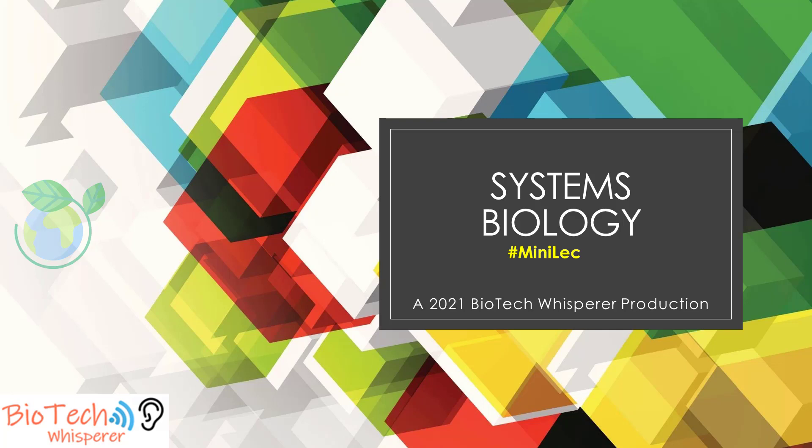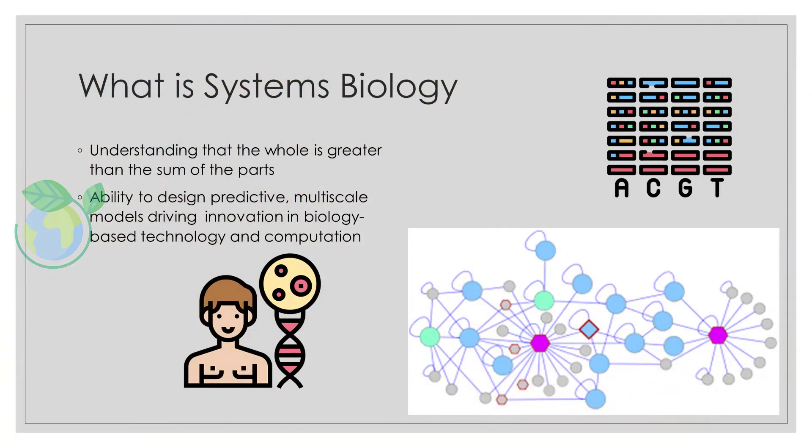Systems biology is the study of biological systems whose behavior cannot be reduced to the linear sum of their parts' functions. Systems biology does not necessarily involve large numbers of components or vast data sets, as in genomics or connectomics, but often requires quantitative modeling methods borrowed from physics.